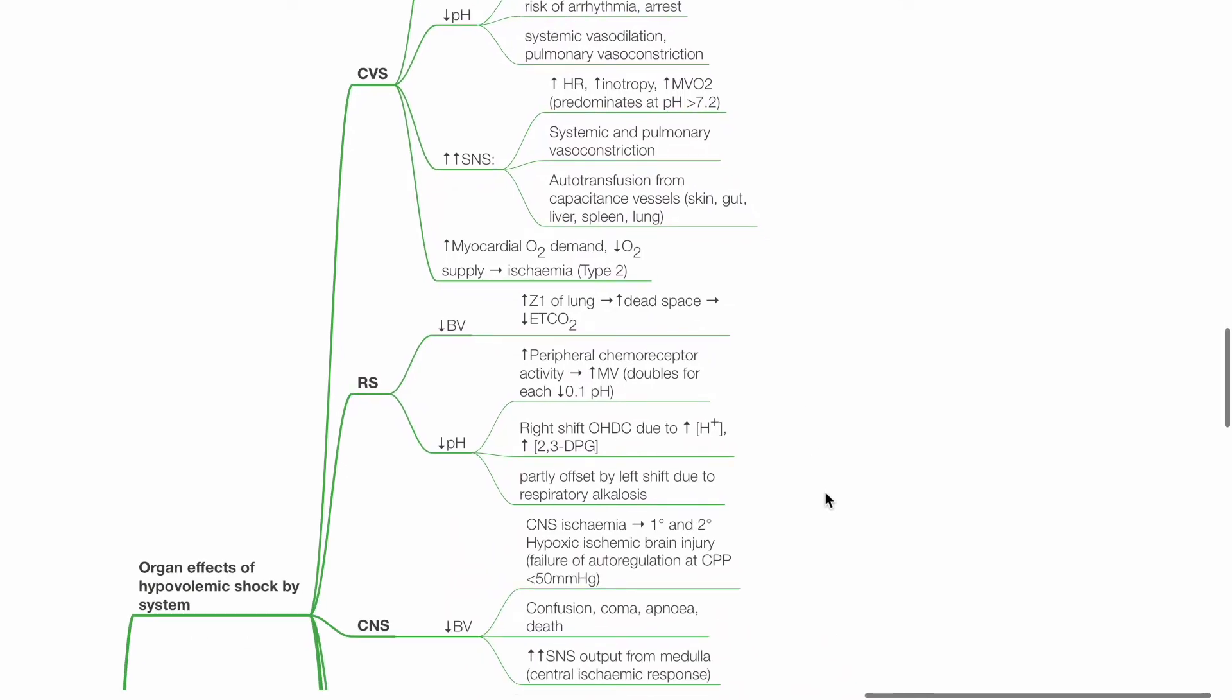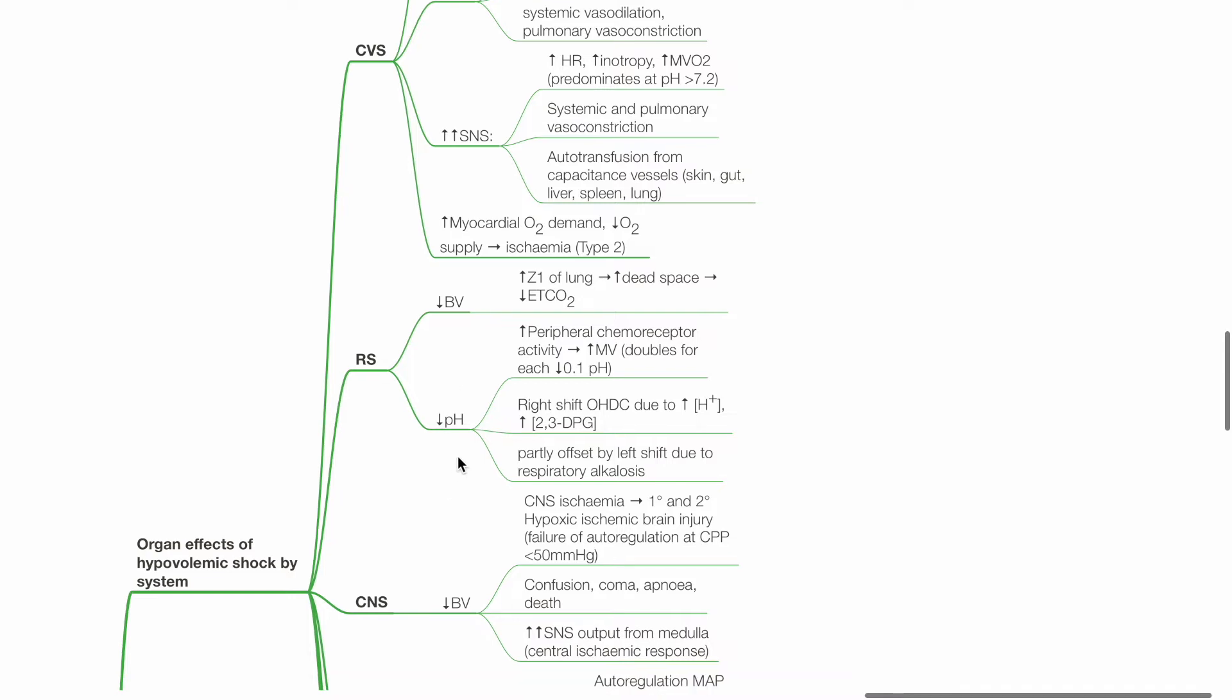For the respiratory system, reduced blood volume increases West zone 1 of the lung. This increases dead space and reduces ETCO2. Reduced pH increases peripheral chemoreceptor activity and increases minute ventilation, which doubles for each reduction in pH by 0.1. There is right shift of OHDC due to acidosis and increased 2,3-DPG. Acidosis is partially offset by left shift due to respiratory alkalosis.